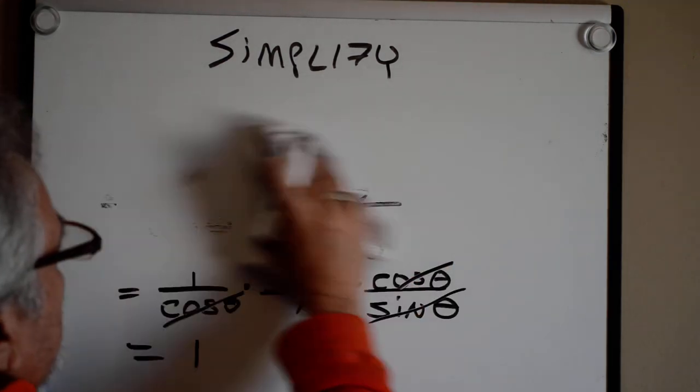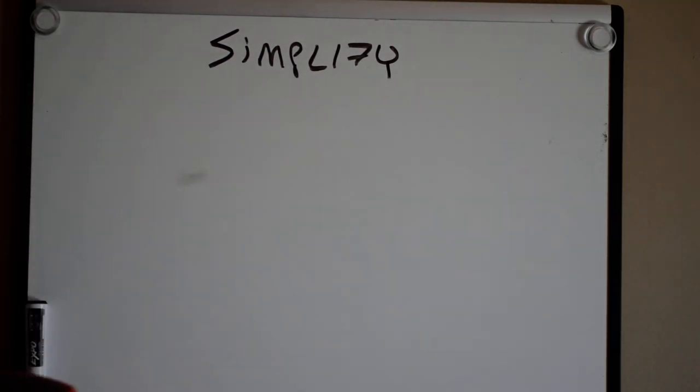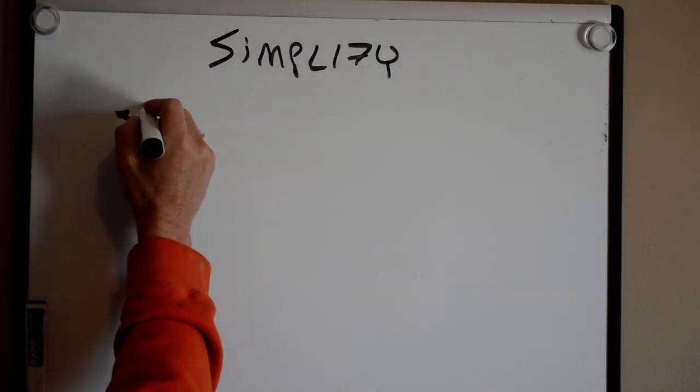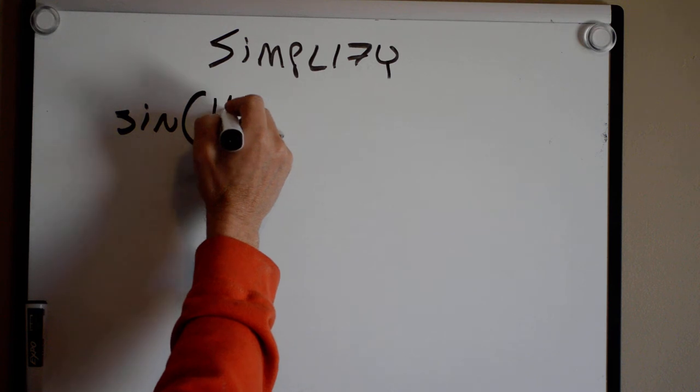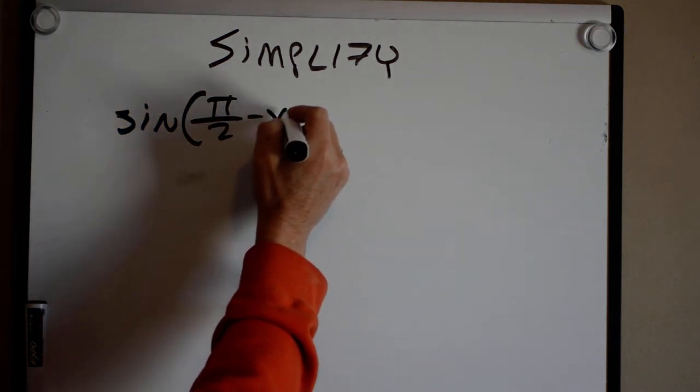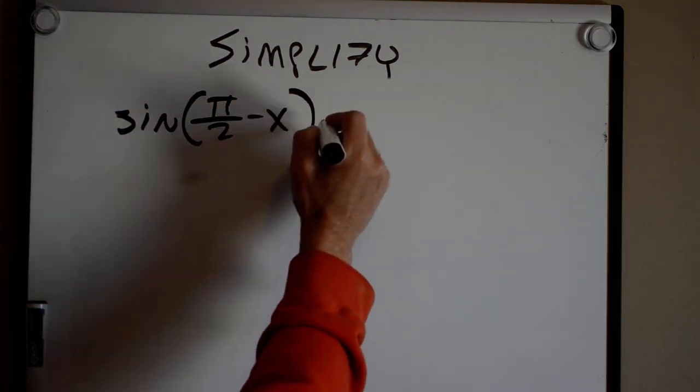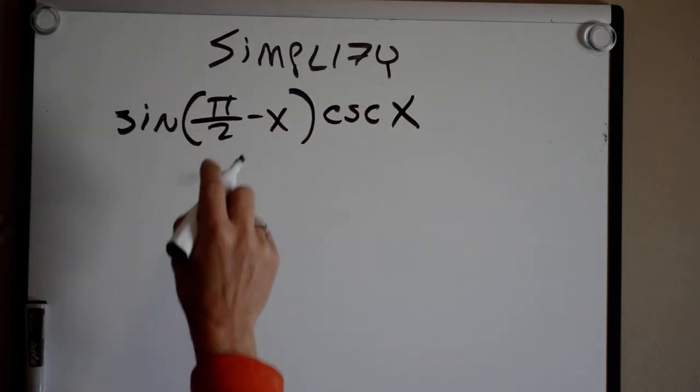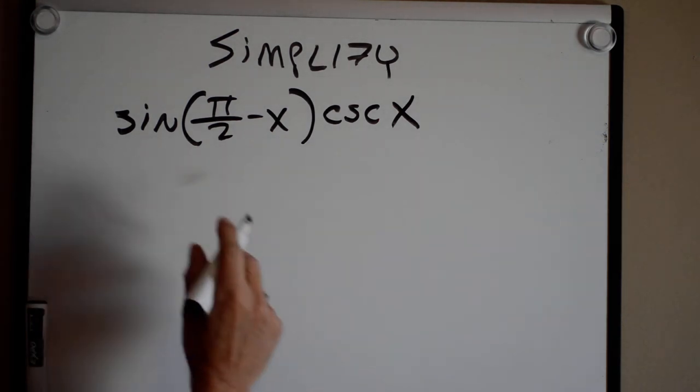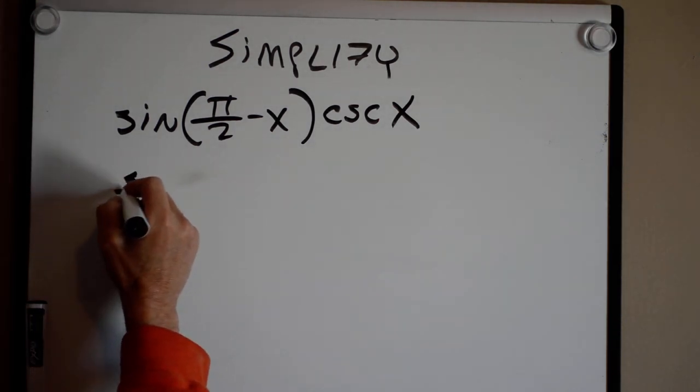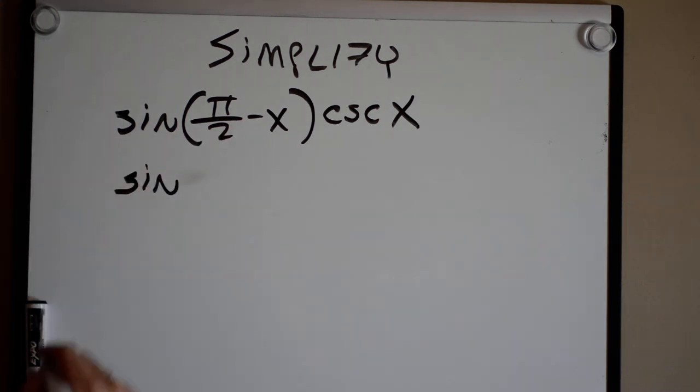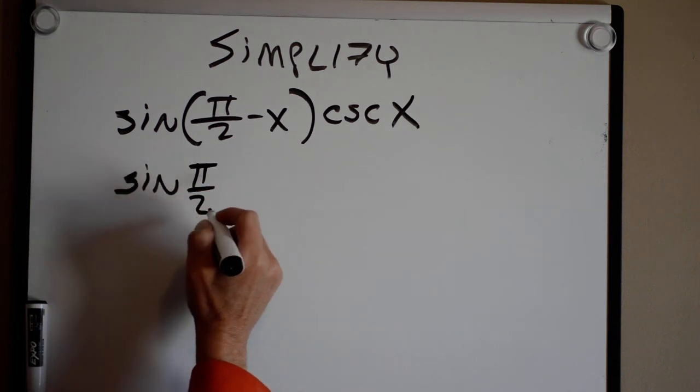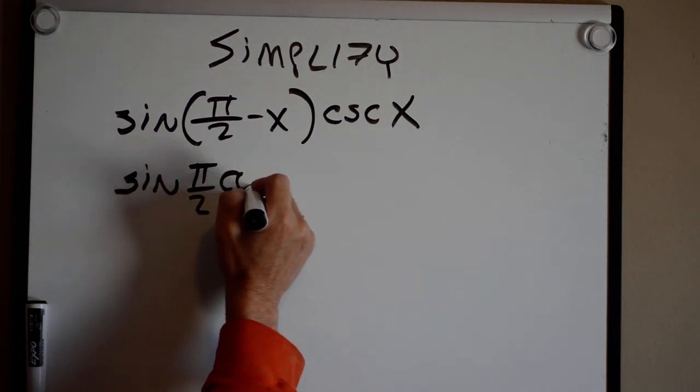Now, let's use our sum and difference formulas. Let's say I have the sine of pi over 2 minus x times the cosecant of x. That unit circle rears its ugly head again. But it should be fine for you guys. I know it is. So this becomes the sine, using my difference formula.